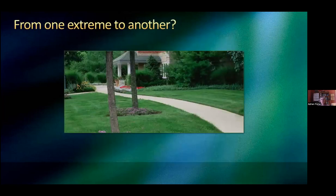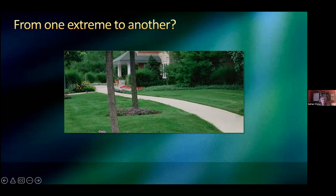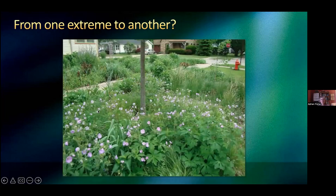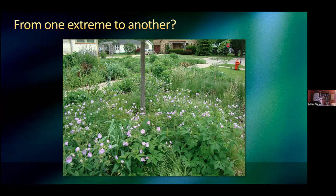You can go from one extreme — very manicured with impatiens in mulch circles and Eurasian grasses like Miscanthus sinensis — or you can go more ecological. This is a parkway planting with a young red oak, wild geraniums, sedges, Carex radiata or rosea, and other things. It might be too much for some people, but in terms of ecology, it sure beats what we see on a lot of parkways.